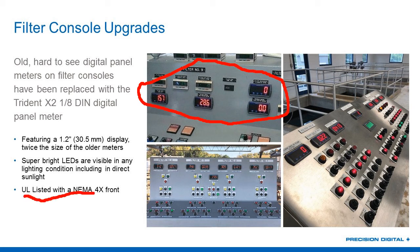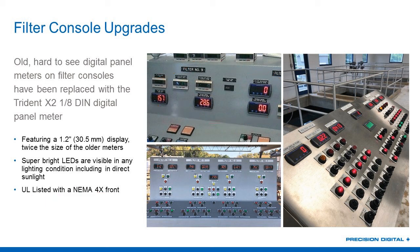The front of them, of course, is going to be NEMA 4X, and then they would mount into some type of panel that would also be NEMA 4X. Really an extremely common application that we see in water treatment plants — filter console upgrades. We do like to see those Trident X2s in them because of the fact that they're so bright and make it so easy for the operators to see those primary variables.